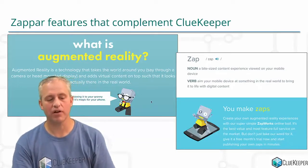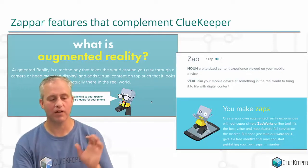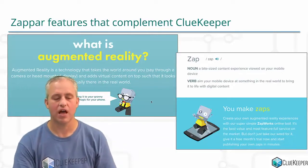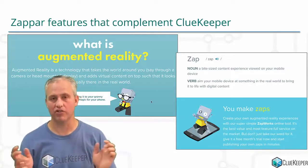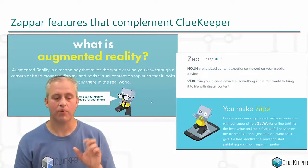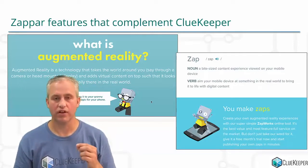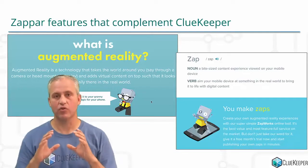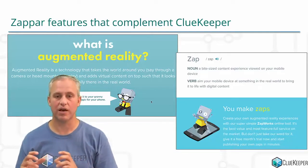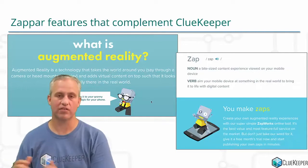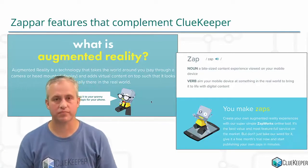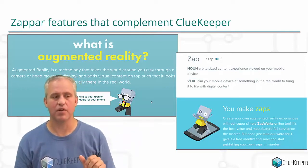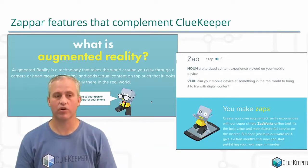First, a little vocabulary. There's ClueKeeper — we're a company — and then there's Zapper, and they're a company. We make these two products and they complement each other really well. Zapper does the augmented reality thing. There is a thing called a Zap — that is the actual augmented reality experience. You build a Zap and then integrate it into ClueKeeper, and that's the experience your players get. There's also ZapWorks, which is the tool you use to build the Zap — you build it over at ZapWorks, not inside the ClueKeeper interface.